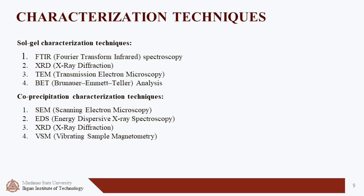Co-precipitation characterization techniques include SEM, EDS, XRD, and VSM. These techniques have been used to investigate morphology and structure, chemical composition, crystal structure and phase, and magnetic properties of co-precipitated materials in various studies. These techniques are essential for understanding the properties and structures of materials synthesized using sol-gel and co-precipitation methods.